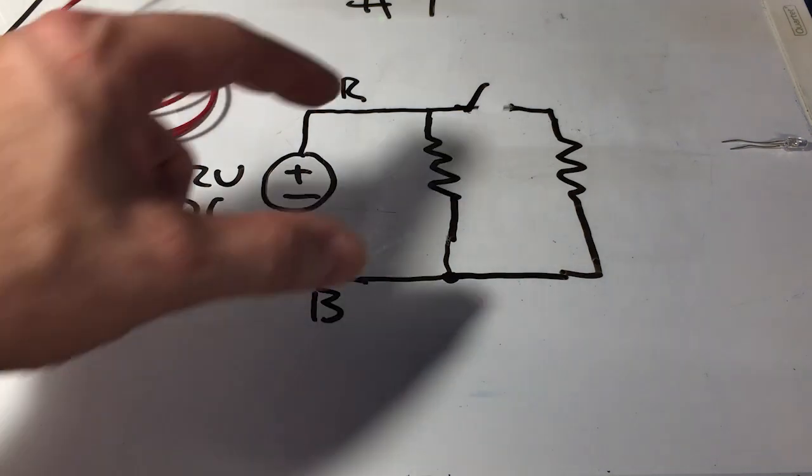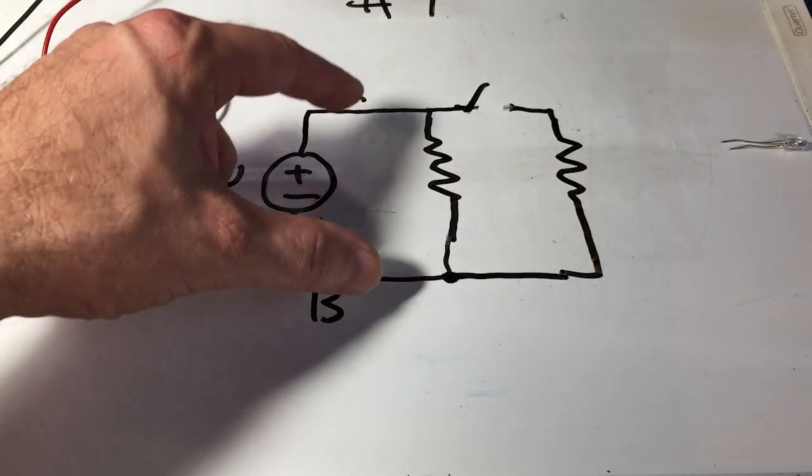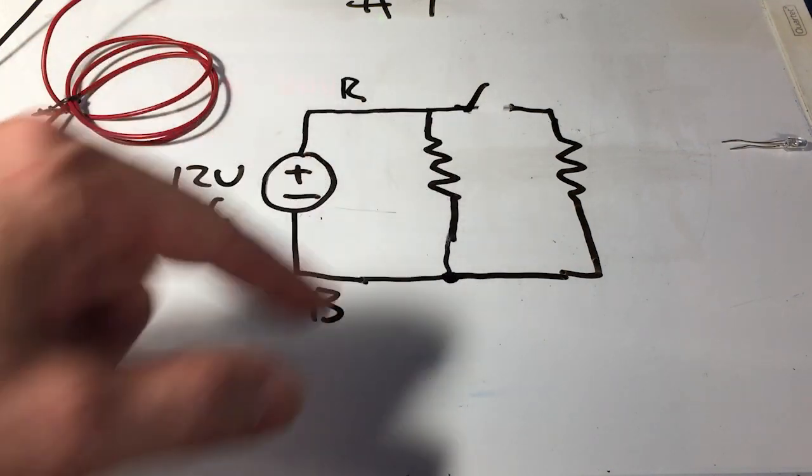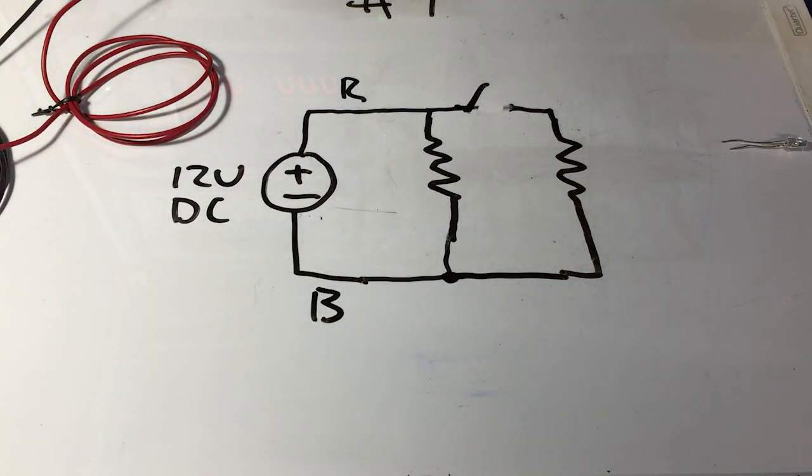If we know that the voltage across the resistors or the filaments and we know the current, then we could figure out what the wattage is. It's really going to be the same equations as for a resistor or any other device. So that's a task that we're going to leave up to you.